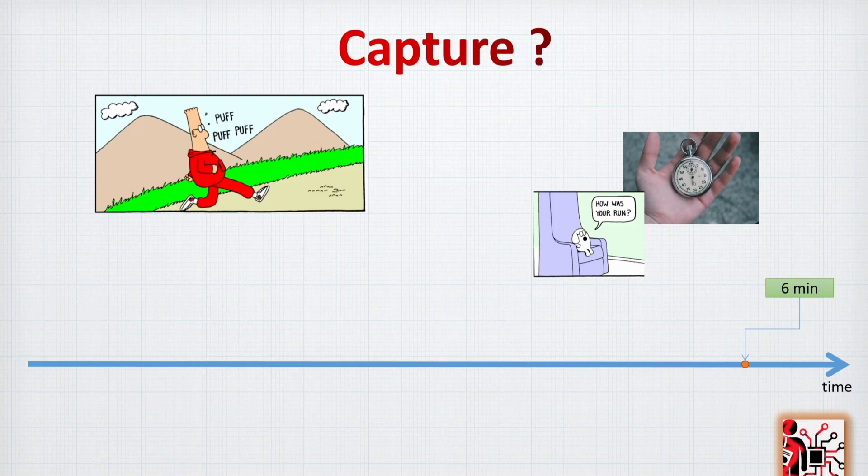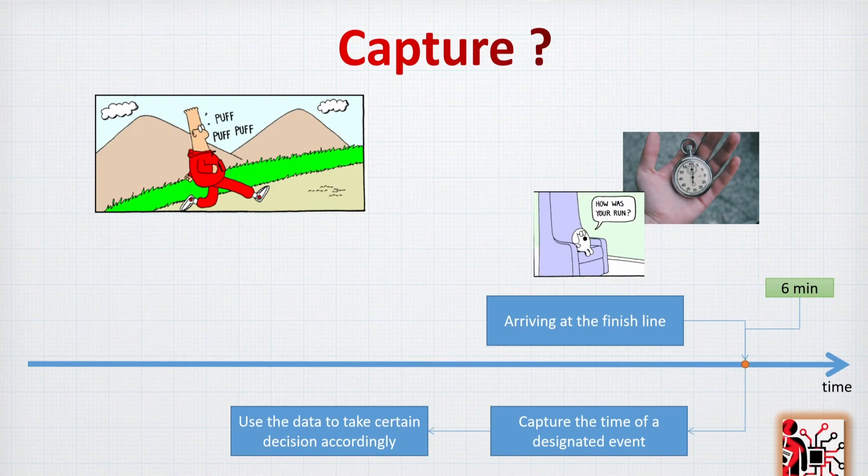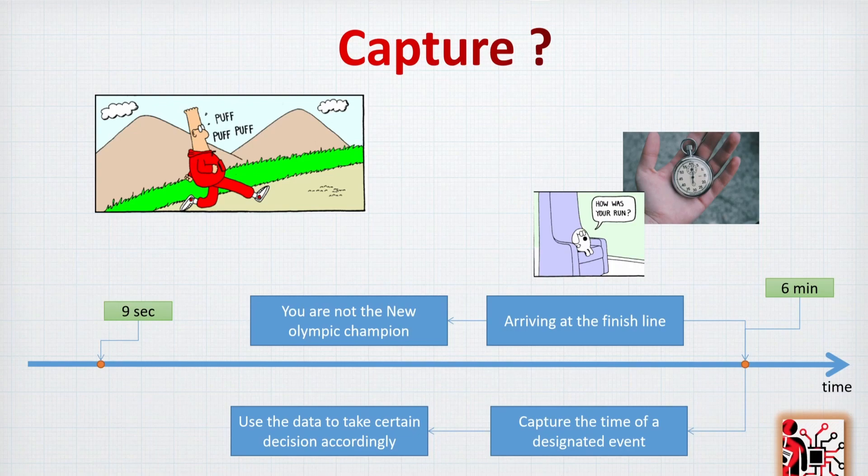So it takes 6 minutes for running. At that time, at the arriving at the finish line, he will capture the time for a designated event. After that, what will happen is, based on that data, there is some decision that will be taken, or some computing result will happen. And here, as the worst record is 9 seconds, you are not that far, but unfortunately, you are not the new Olympic champion. That's how the capture goes inside the microcontroller. That's a short and simple explanation of how things work.